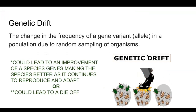Another concept is genetic drift — the change in the frequency of a gene or a variant, which is an allele. A gene variant is an allele; remember, those are different forms of a gene in a population due to random sampling of organisms. Genetic drift can lead to an improvement of a species' genes, making the species better as it continues to reproduce and adapt. However, genetic drift can also cause extinction of a species — a die-off of that particular organism — depending on which way those gene variants and the frequency of those genes within the gene pool are going.